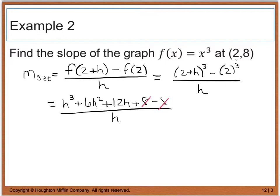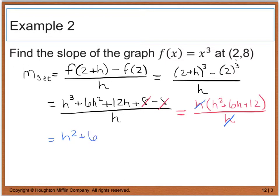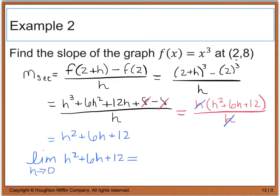Simplifying, the 8's cancel. I can't simplify anything else with the h³, h², and h terms directly, but I can factor an h out. That leaves h times the quantity (h² + 6h + 12), all divided by h. The h's cancel, leaving us with h² + 6h + 12. Taking the limit as h approaches 0, I plug in 0 for each h, and I end up with a slope equal to 12 at the point (2, 8).